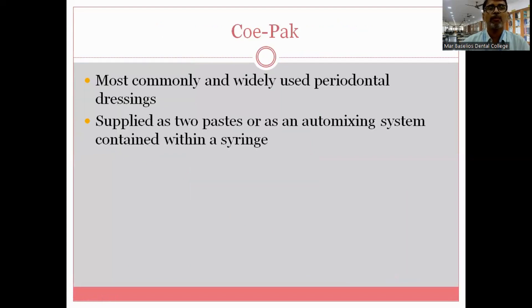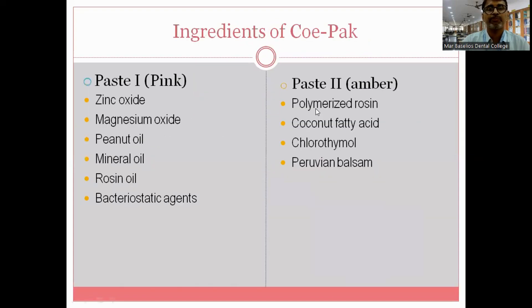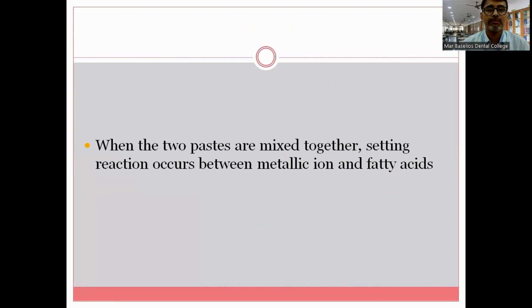Coe-Pak is the most commonly and widely used periodontal dressing; in many institutions it is used as a synonym for periodontal dressing. It is supplied as a two-paste system or as an automix system contained within a syringe. The two-paste system has a pink paste and an amber-colored paste. The pink paste contains zinc oxide, magnesium oxide, peanut oil, mineral oil, rosin oil, and bacteriostatic agents. The amber paste contains polymerized rosin, coconut fatty acids, chlorothymol, and Peruvian balsam. The setting reaction occurs between the metallic ion — magnesium oxide — and the coconut fatty acids.